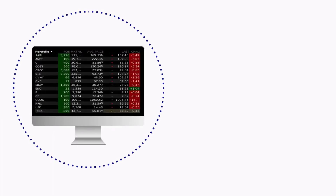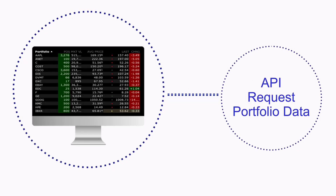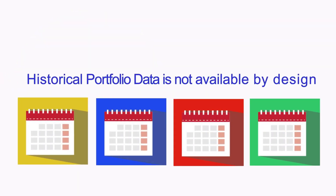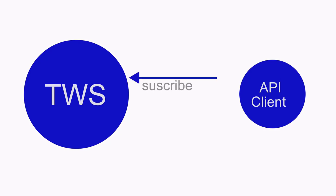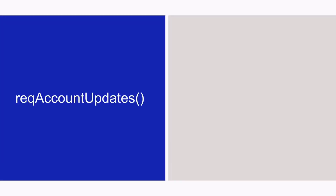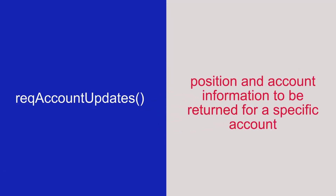Next, we'll discuss how to receive portfolio data in the API. A common task of an API program is to receive real-time information about the current portfolio. It's important to note that historical portfolio information is not available by design, since TWS is a trading application. There are several different functions which can be used to subscribe to position updates, each following the same subscribe-and-publish model: an initial subscription request is made, then TWS sends back a complete list of all positions matching the query, and afterwards continues to send back updates as they occur in real time until the subscription is canceled. The first function is REQAccountUpdates, which causes both position and account information to be returned for a specified account — it can only be used with a single account at a time, so it's most commonly used in single account structures.